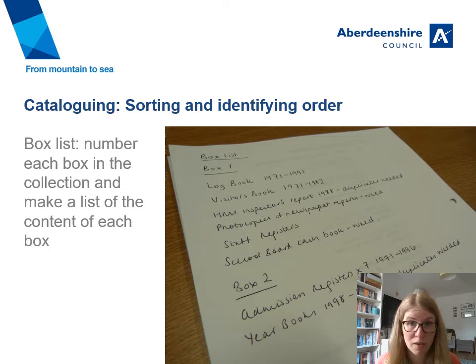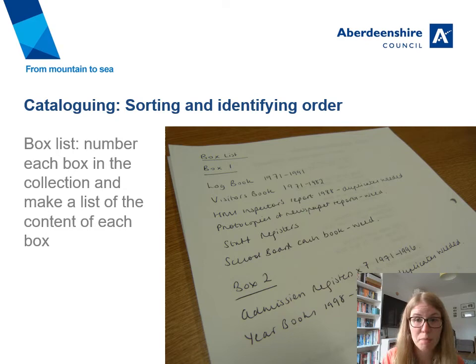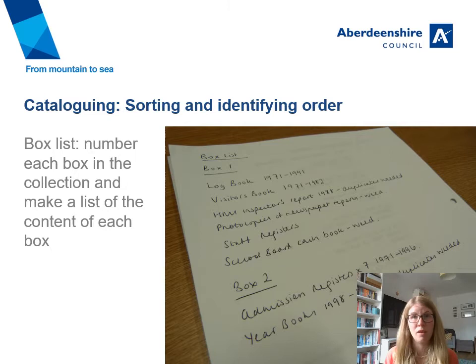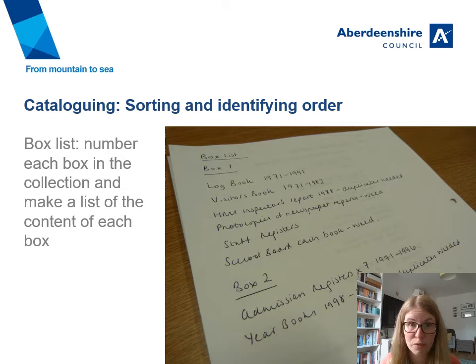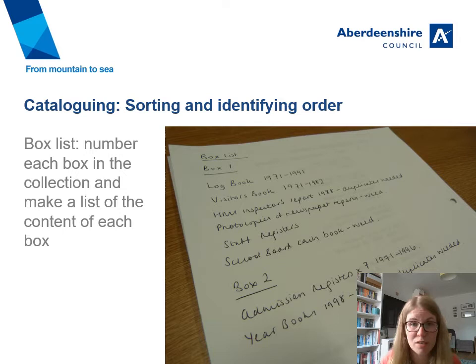Once you're keeping to provenance, you would then try and do a box list and identify the material you want to keep and get a sense of how you should arrange it. You would number each box in the collection and then make a brief list of what's in that box, noting anything you think should be kept, any date ranges, and if there are any personal data issues — records holding personal information about living individuals. In Aberdeen City and Aberdeenshire we categorise that within the last 100 years, and under data protection legislation you have to be careful with how you provide access to that material. You might also note if anything's duplicate, remove metal fastenings, replace them with brass paper clips, and do any other preservation measures.